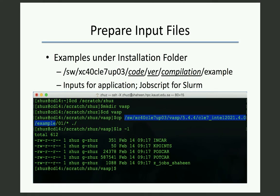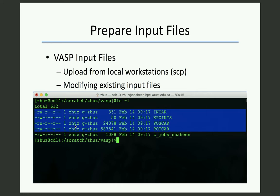Now let's start to run the example. As mentioned, the only place you can run your jobs is the scratch directory. So cd to scratch/your_username, then create a new folder called vasp and enter it. Then copy the VASP example from the provided path to the current directory. There are two types of input files in this example. The first four files are the input files for VASP itself. In a real calculation, you can prepare your input files on your workstation, then upload them to Shaheen using the scp command, or you can prepare the input files by modifying existing files.